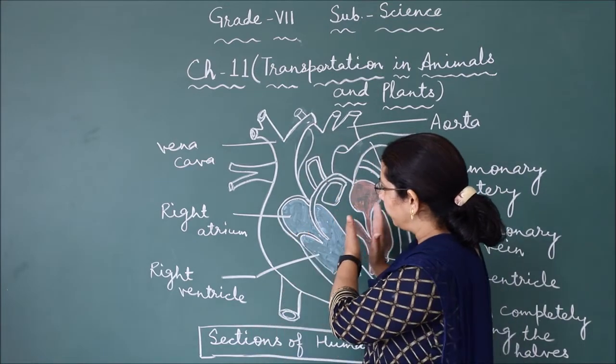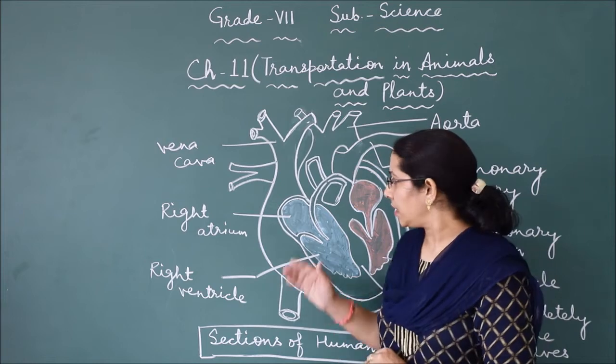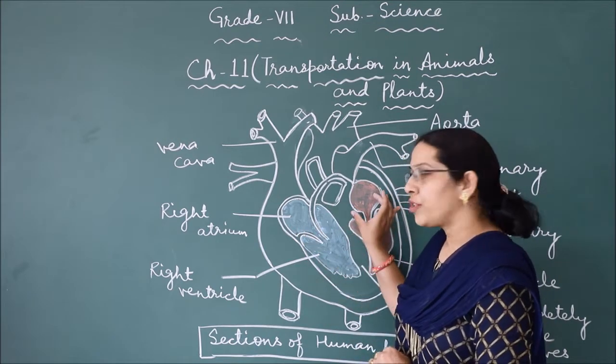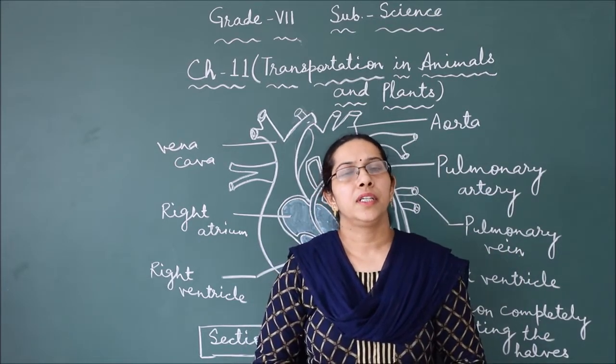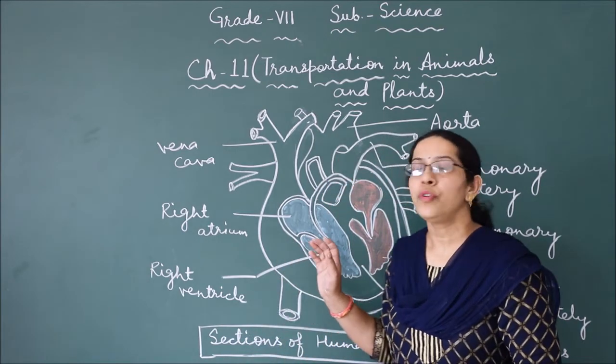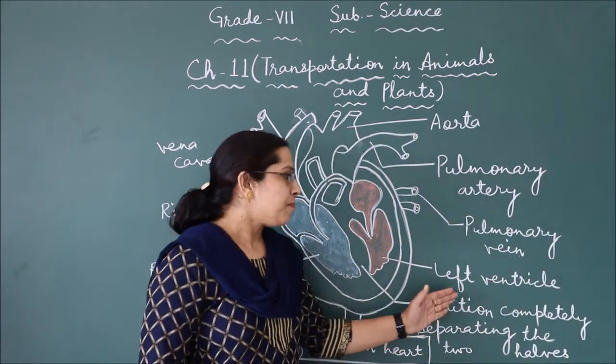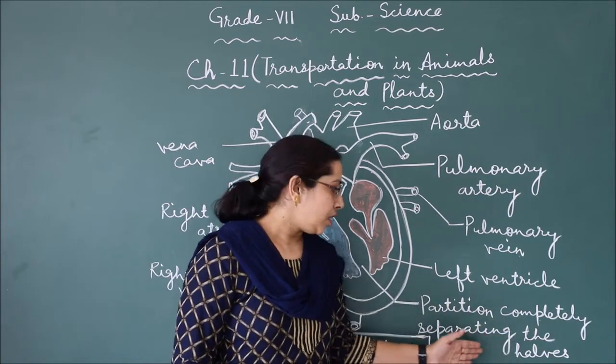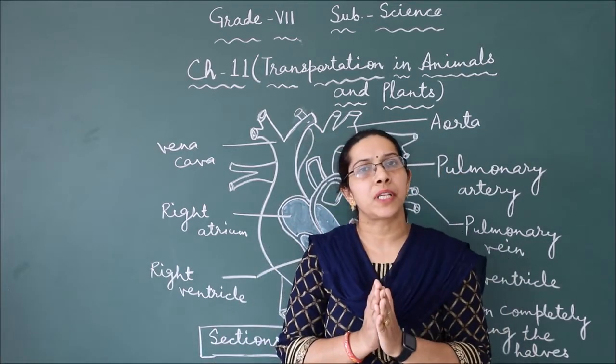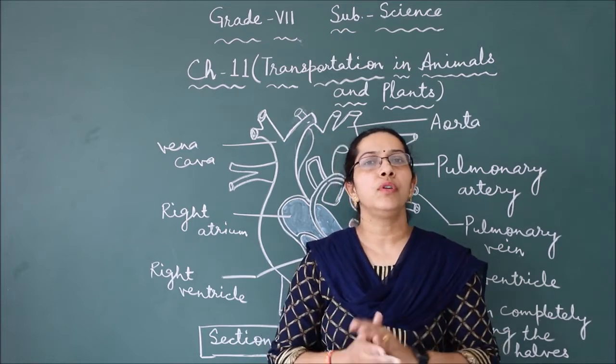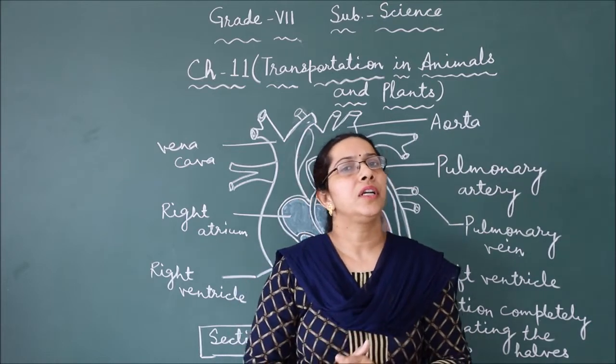These two parts of the heart are divided by a septum. You can see in this diagram that I have made blue color and red color. Blue is a symbol of deoxygenated blood flowing here, carbon dioxide rich blood. Red is pure blood, oxygenated blood. So pure and impure blood should not be mixed. This is why there is a partition. The partition completely separates the two halves. The septum divides the heart in between and prevents intermixing.